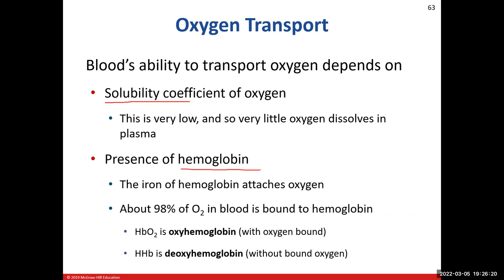Hemoglobin is the protein molecule that transports oxygen via red blood cells — erythrocytes. It's the Uber for oxygen. Oxygen directly attaches onto the iron molecule located in hemoglobin, and there are four of them, so one hemoglobin molecule has the potential to carry four oxygen molecules. Looking at our blood, roughly about 98% of our oxygen is attached onto hemoglobin. Very little is in the plasma because of that low solubility coefficient. Nitrogen is even worse. Carbon dioxide is a different story, which we'll discuss in a moment.